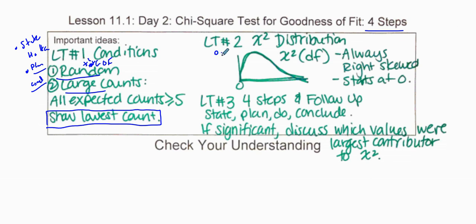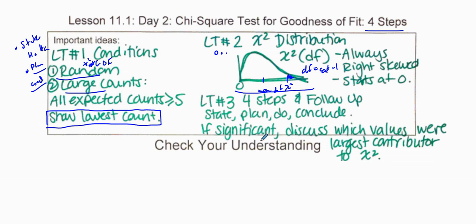The next part is the Do step. Draw your chi-square distribution — it's always skewed right. Your mean equals your degrees of freedom, which is the number of categories minus 1. From the distribution, find your chi-square statistic, then find the p-value using your calculator or Table C. Then conclude, and discuss which category is the largest contributor to the chi-square statistic.